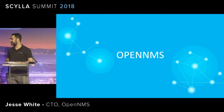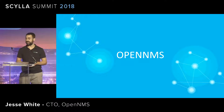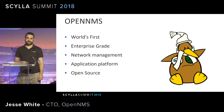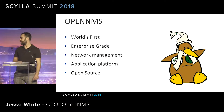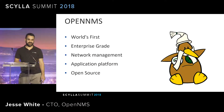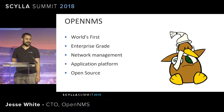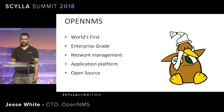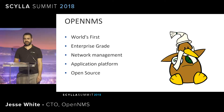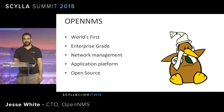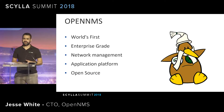Before we talk about Newts, let me give you a bit of background about OpenNMS and how we do time series data. OpenNMS is the world's first enterprise-grade network management application platform developed on the open source model. It was started in 1999 and actively developed ever since, developed to scale from day one. The solution is written in Java and published under the AGPL v2 license.